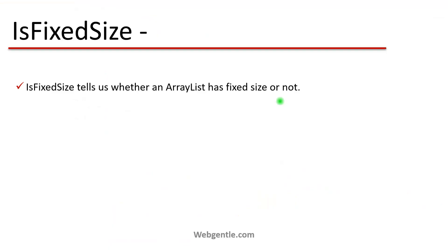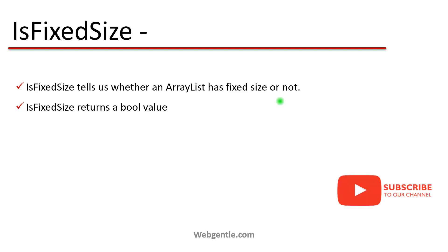IsFixedSize tells us whether an ArrayList has a fixed size or not. It returns a boolean value. We have different types of ArrayList, and if you need to check whether your ArrayList is of fixed type — meaning its size is fixed — the IsFixedSize property will return true or false. If the ArrayList is of fixed size it returns true, otherwise false.